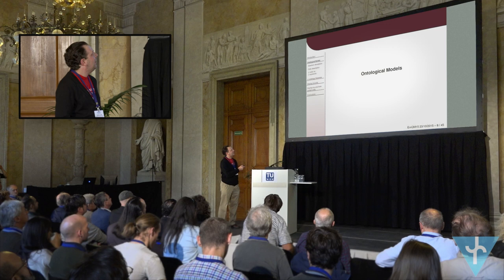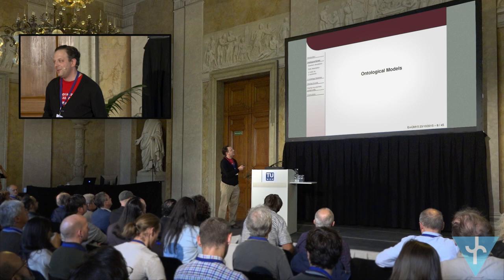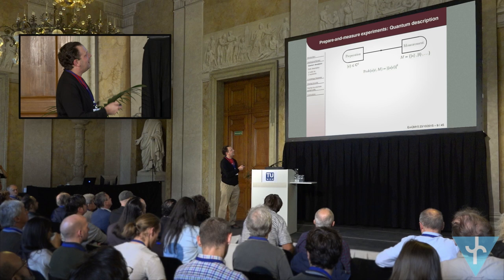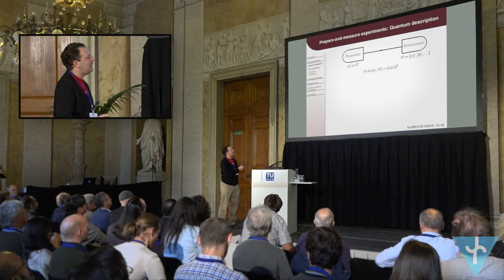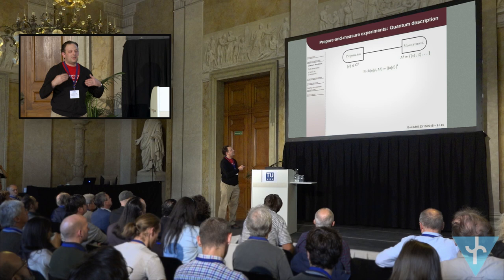To prove theorems about these things, we need a mathematical framework — the ontological models framework. It's nothing too fancy; it's really the same framework that John Bell was using to prove his well-known theorem. We'll only consider the simplest quantum experiment: a finite-dimensional system is prepared in some pure state and then immediately measured in some orthonormal basis. Quantum mechanics supplies the probabilities given by the mod-squared inner product. We want to posit the idea that there might be some actual objective physical properties that the system possesses between preparation and measurement — following John Bell, we call those lambda.